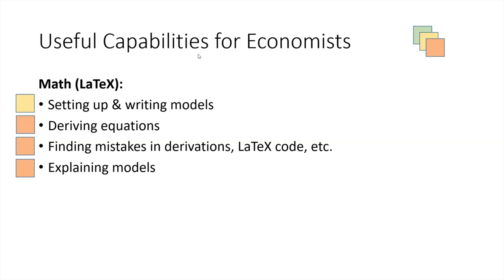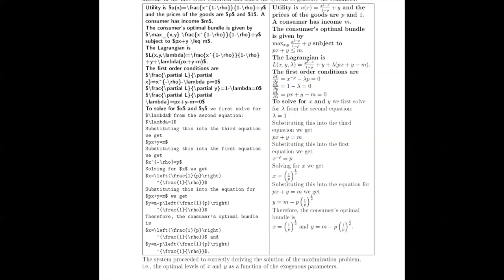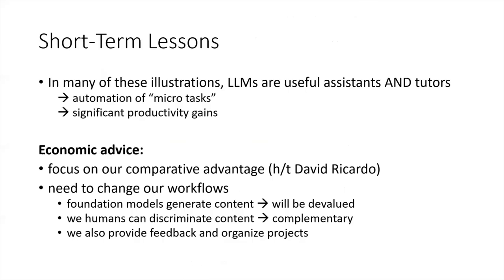Math is something where GPT-4 is a really significant step over GPT-3.5. Let me show one example that GPT-4 aced: I asked it to solve a consumer maximization problem with a utility function over two goods, where the first good enters in an isoelastic way and the second linear, and it solved that without any problem.